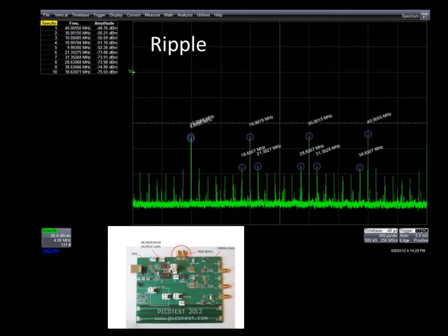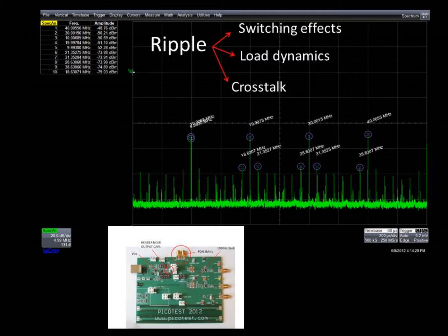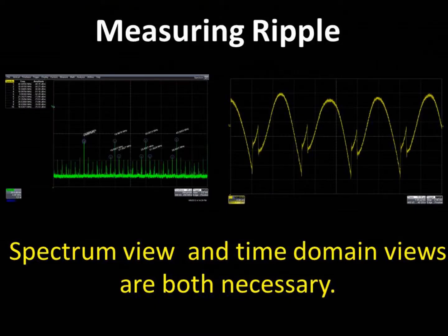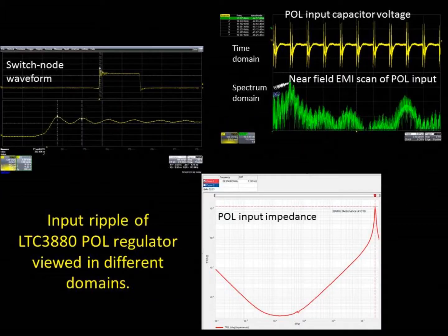Since the ripple is composed not only of our switching related effects, but also the dynamics of the load and crosstalk issues on the board, the spectrum view is generally superior to the time domain view. However, we still want to see the time domain measurements to look for glitches and dynamic excursions such as LdI/dT spikes. Ultimately, we want to use data from various domains and correlate the measurements in order to isolate sources and targets, as we demonstrate with the measurements shown here.